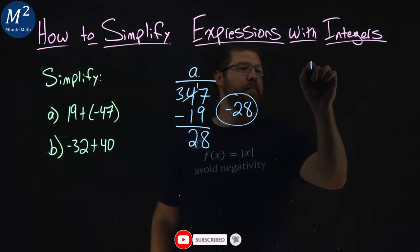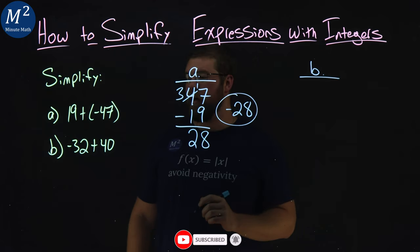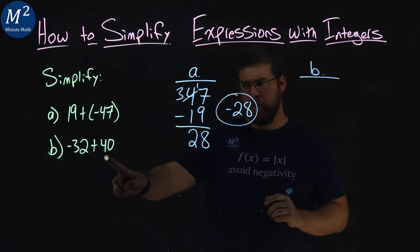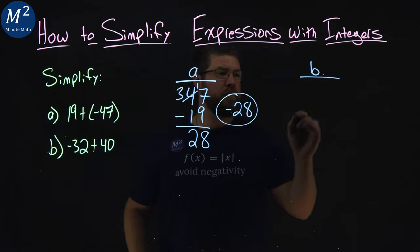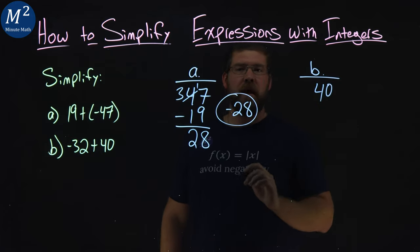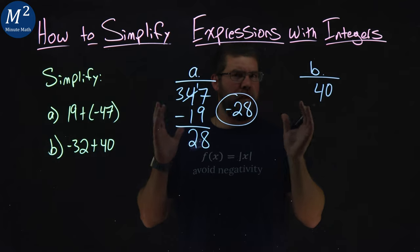Part B. Same thing. Negative 32 and 40. Well, 40 is the larger of the two numbers, so we write that first. And then we have a negative 32. We find a difference there.